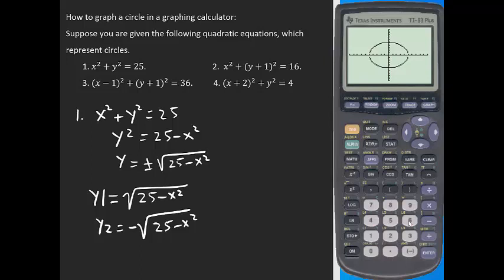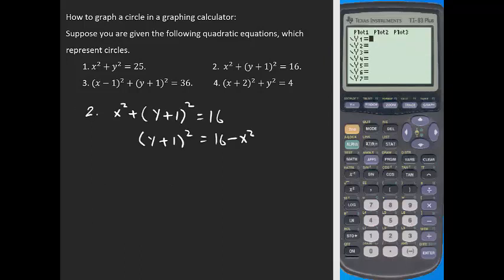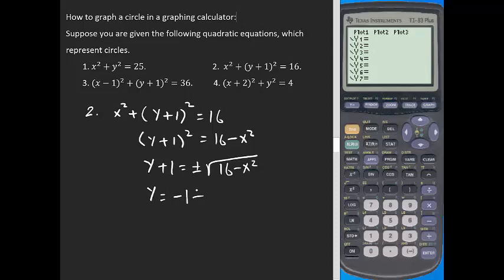Now working on example number two: x squared plus (y plus 1) squared equals 16. We subtract x squared from both sides, then take the square root of both sides to get y plus 1 equals plus or minus the square root of 16 minus x squared. Subtracting 1 from both sides gives y equals negative 1 plus or minus the square root of 16 minus x squared.